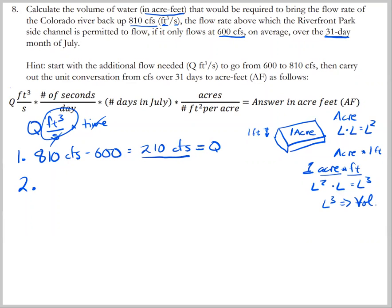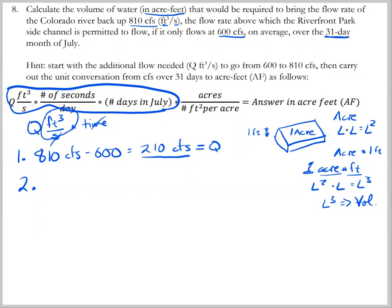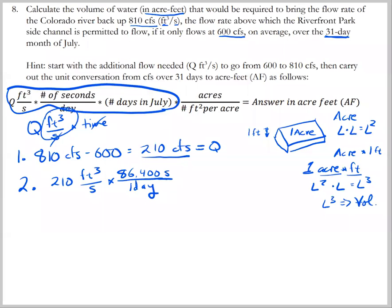Step two, now we're going to convert the Q to a volume by multiplying by time. We have 210 cubic feet per second times the number of seconds per one day. One day has 86,400 seconds per day. And now we have cubic feet per day. If we had 210 cubic feet per second for 24 hours, 86,400 seconds, then we would get cubic feet per day. But now we want to go over 31 days, so times 31 days.